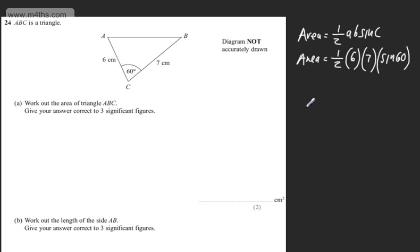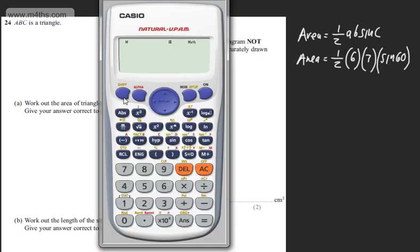So simply putting this in, we can type this into the calculator. Make sure you're in degrees mode. There should be a little D there. If you're unsure, shift mode 3. So what I'm going to have is 0.5 times by 6, times by 7, times by the sin of 60 degrees. That's going to give me 21 root 3 over 2. So this is going to be equal to 18.18.